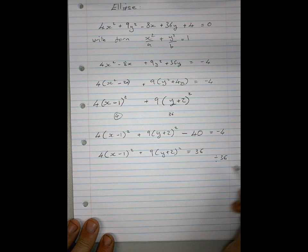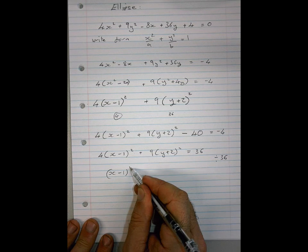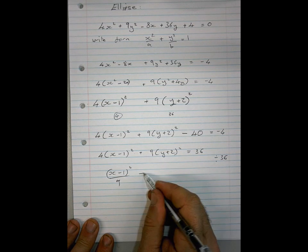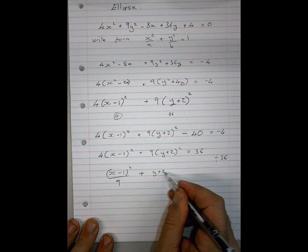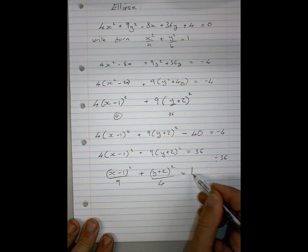So by dividing by 36, let's just cut a couple of corners. So we end up with (x - 1)²/9 + (y + 2)²/4 = 1. Bang. Done.